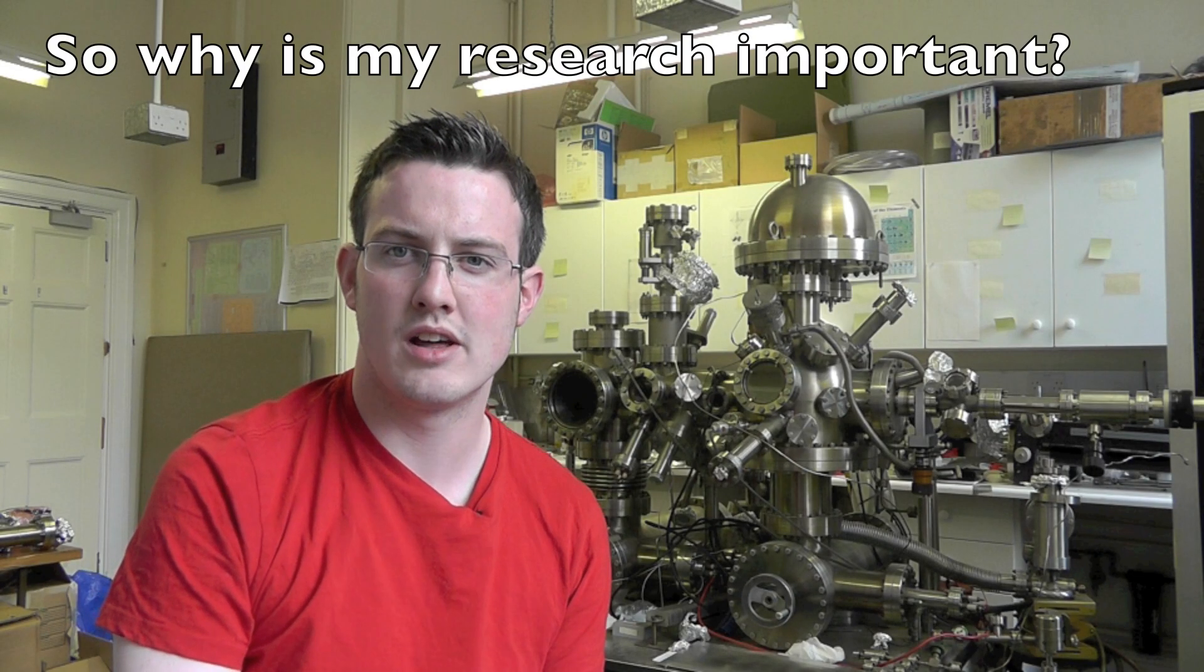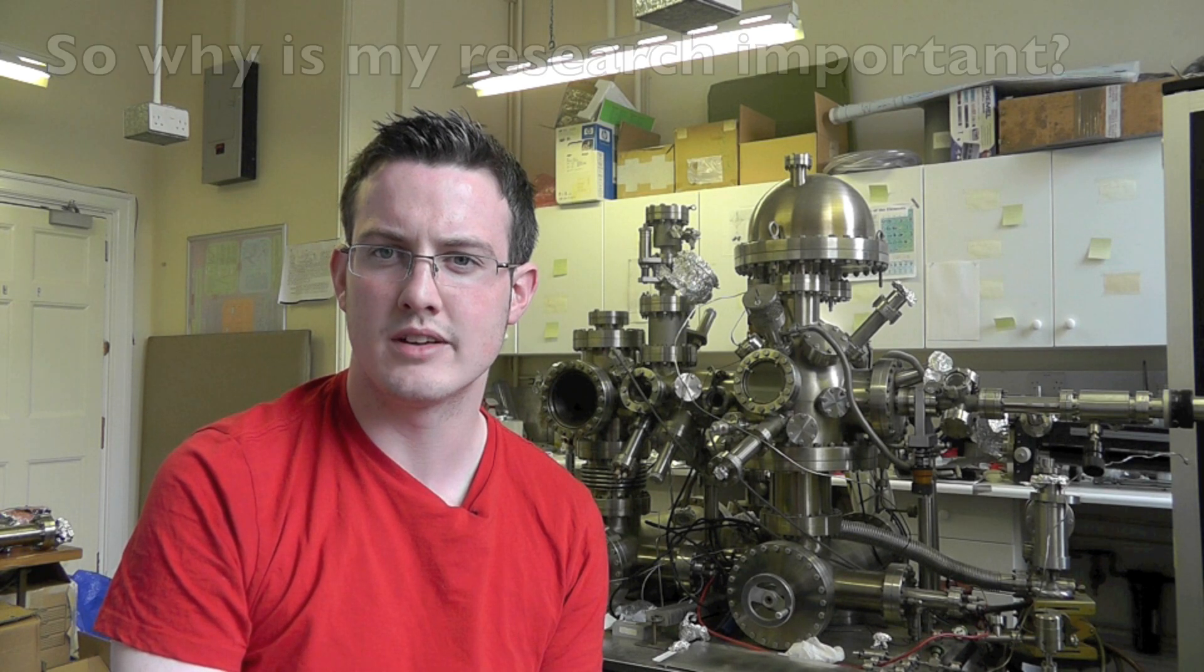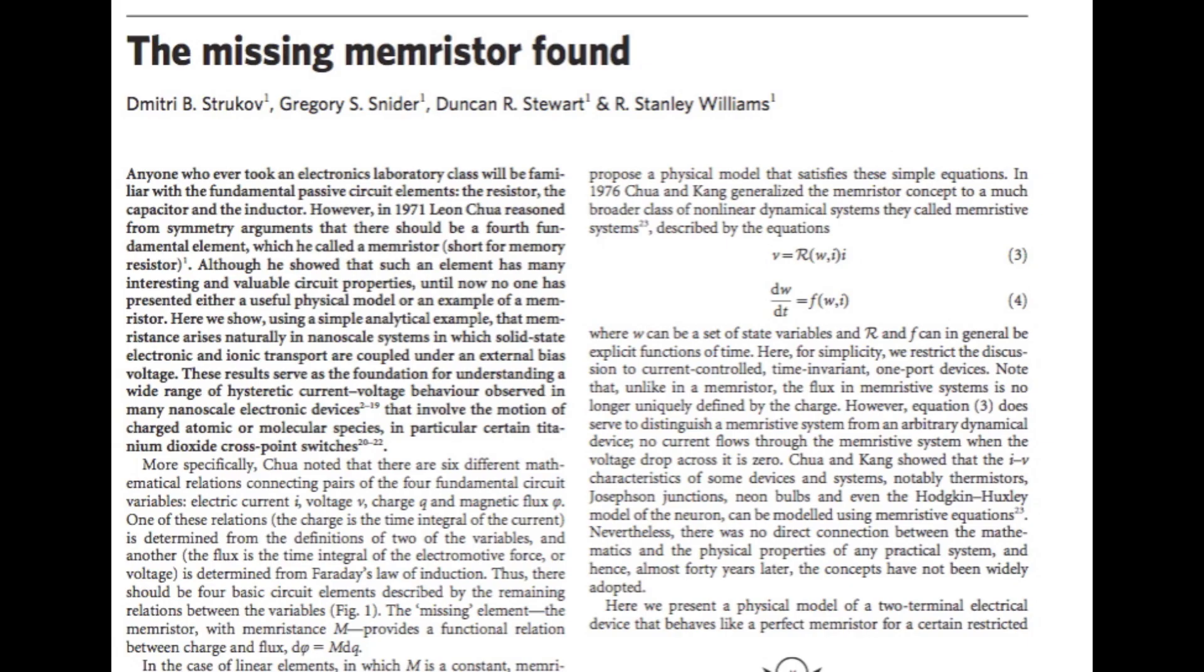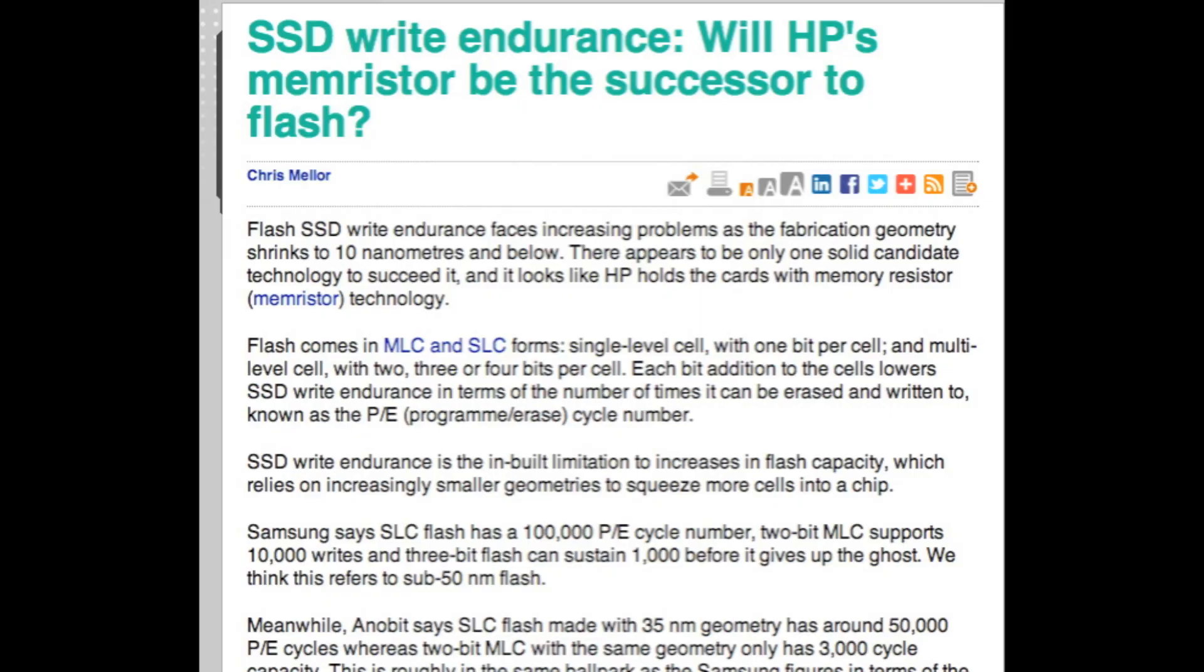A new nanoscale device named the memristor has been developed by scientists at HP. It consists of defect-rich titanium dioxide sandwiched in between two platinum electrical contacts. This new memory storage device would be able to hold twice as much information as the next leading technology.